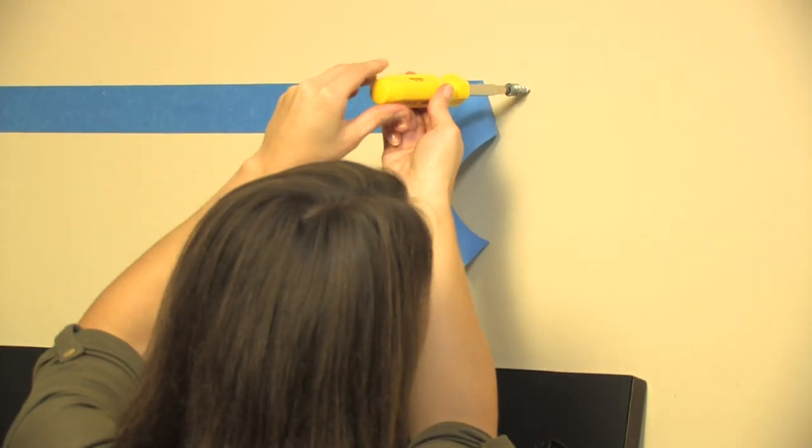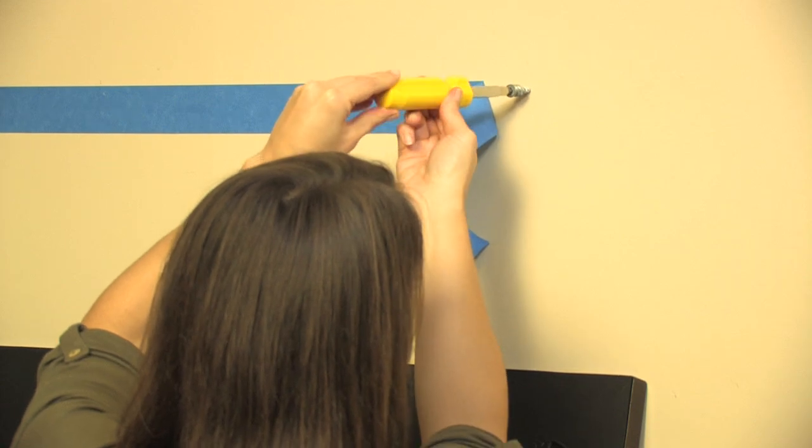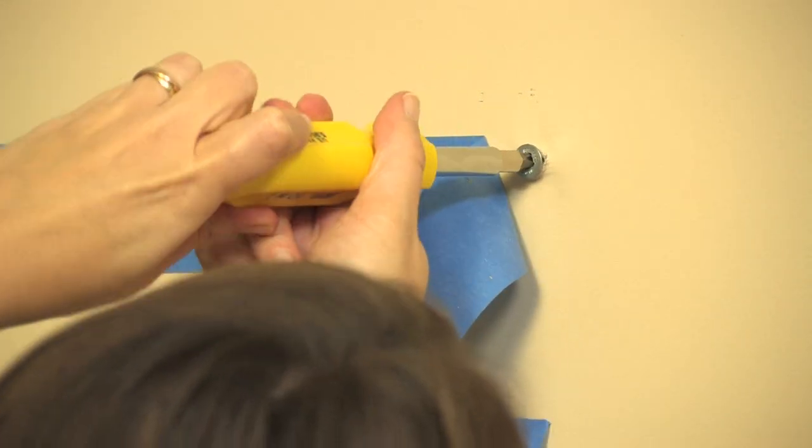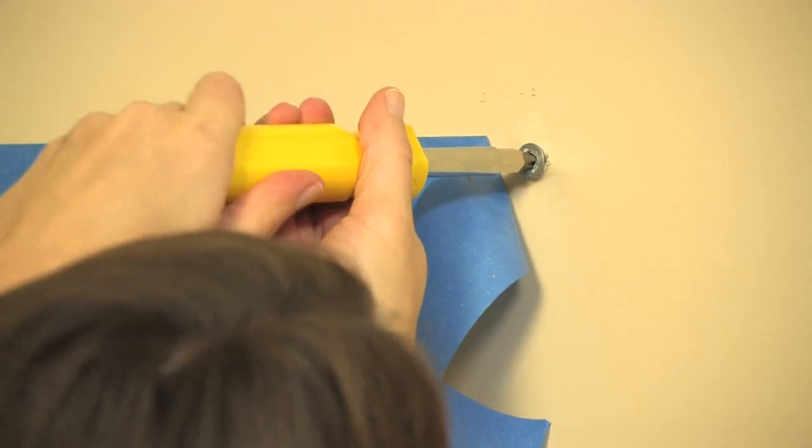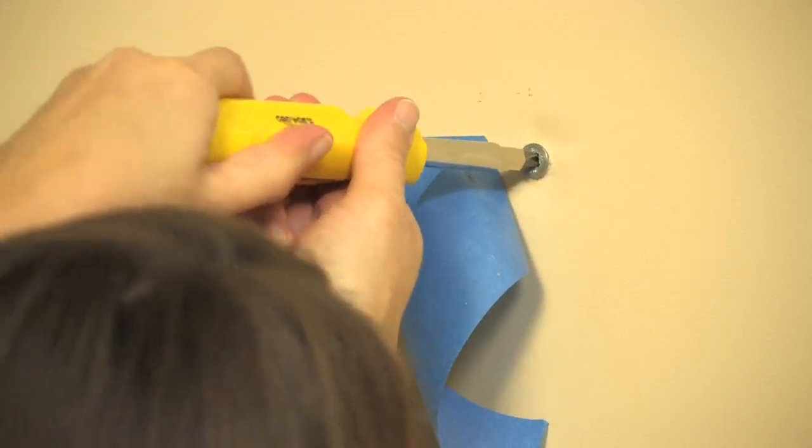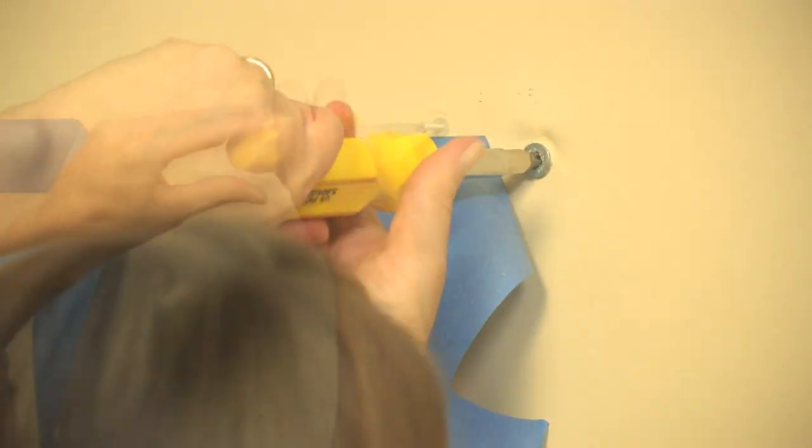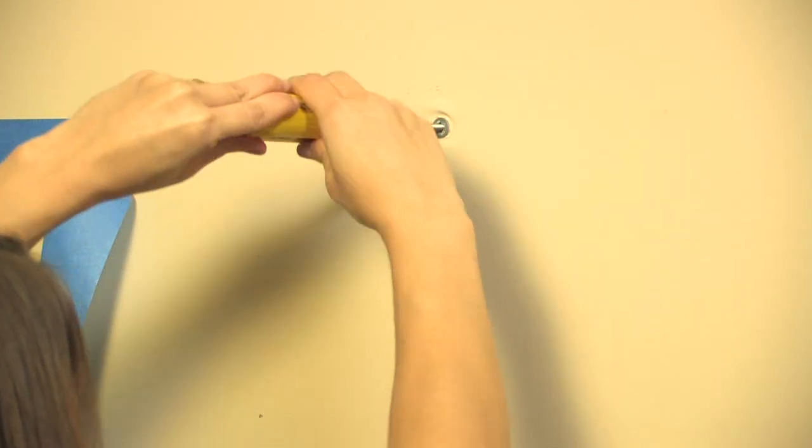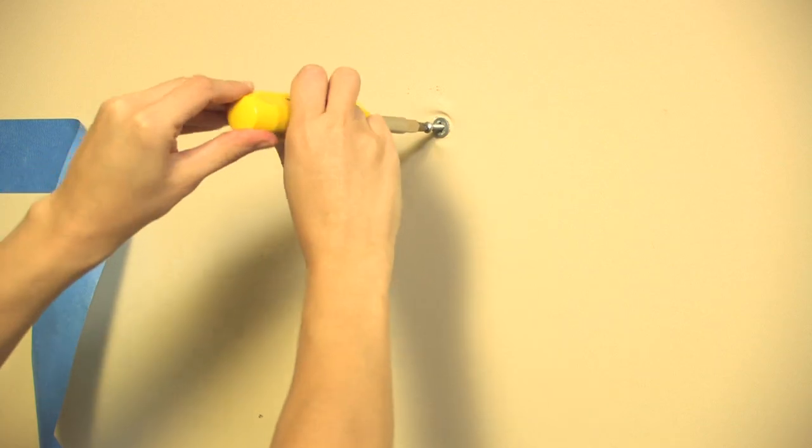If your insertion marks do not align with the stud, use a Phillips screwdriver to install the provided anchor or toggle on your insertion marks. Continue rotating until the large flange becomes even with the surface of the wall. Do not over tighten. Install the provided screw into the anchor or toggle and rotate until the screw head is about one quarter inch from the wall.